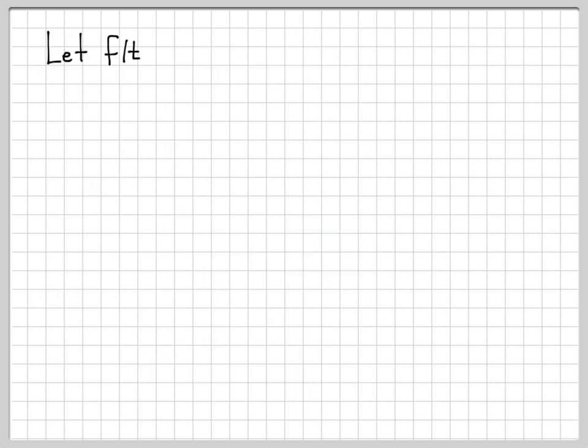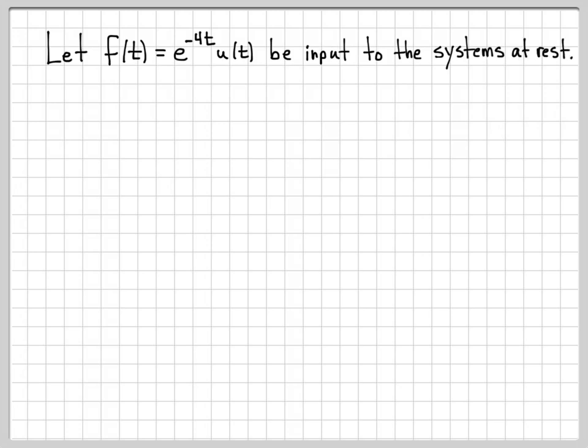This is very useful because when we have a certain type of input, computing the output of the system is very trivial. By output I mean the zero-state response — we want to know if the system is at rest and we put in an arbitrary input, what comes out. Normally we do that with convolution. However, if our input has the form e to the st, we know that the output will be e to the st times a number. Let's work a specific example of how that works.